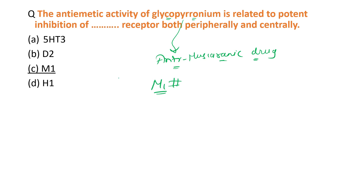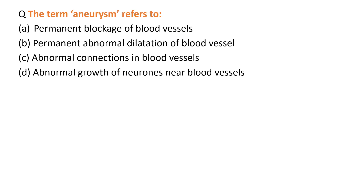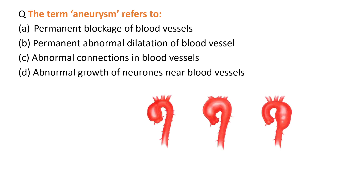The next MCQ: the term aneurysm refers to what? Aneurysm means there is a permanent abnormal dilation of a blood vessel. The blood vessel undergoes permanent dilation, as seen in the image. This permanent dilation of the blood vessel is known as aneurysm. So the answer is option B.